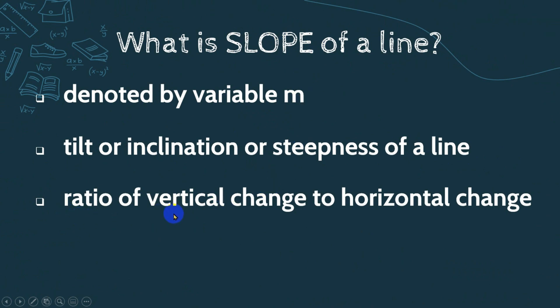And it is also the ratio of vertical change to horizontal change, or it is the change in y over the change in x. This is the definition of the slope of a line.